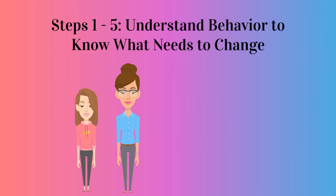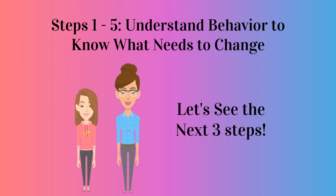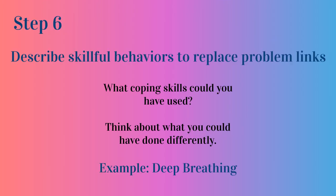The first five steps were to help us understand our behavior so that we can know what to change. Now let's take a look at the last three steps. Step 6: Describe skillful behaviors to replace the problem links. What coping skills could you have used? What could you have done differently? For example, practice deep breathing.